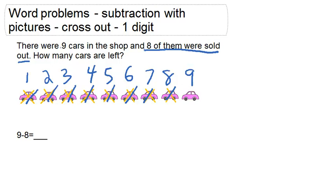So how many cars would be left if eight of the nine cars are sold? Just one car. So nine minus eight equals one.